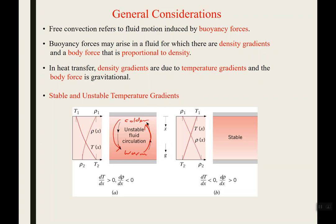This would be the unstable condition. The stable condition is where you have warm fluid sitting on top of cold fluid — it'll more or less just sit there. There will still be some diffusion and conduction, but that's a much more stable condition if your temperature gradient goes the opposite way.